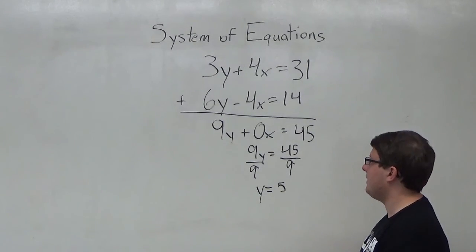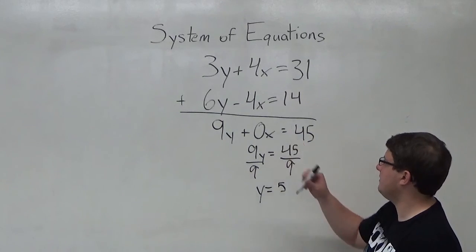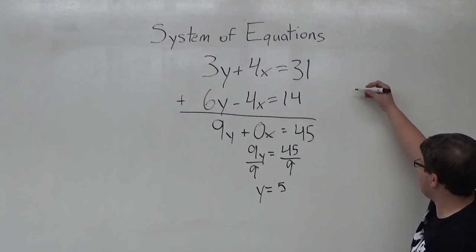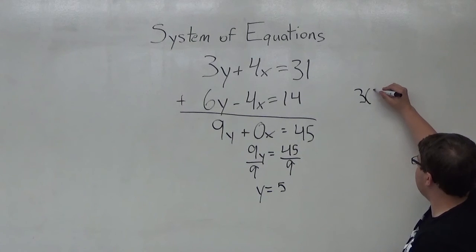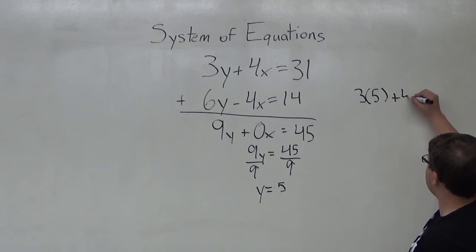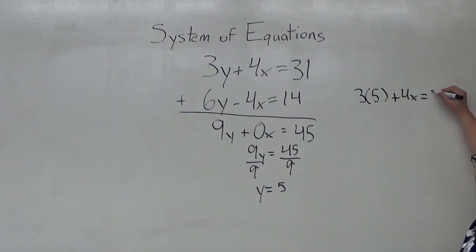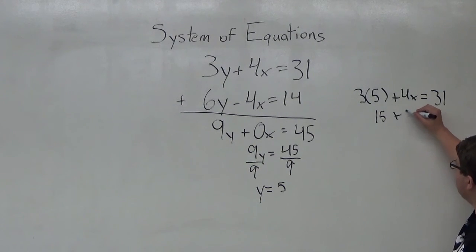And now I'm just going to plug in this y value back into the first equation. So I'll get 3 times 5 plus 4x equals 31.